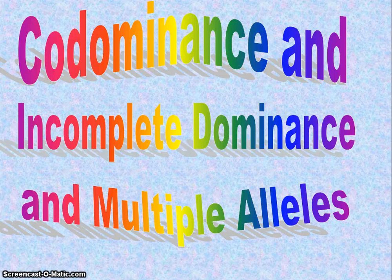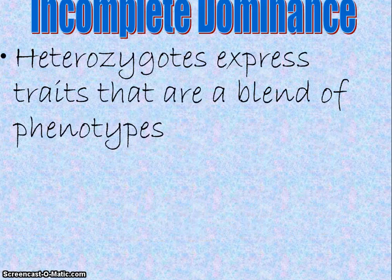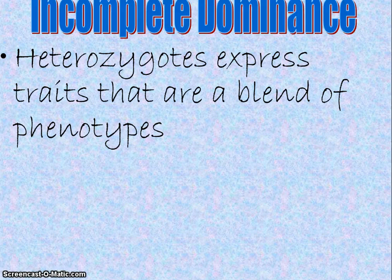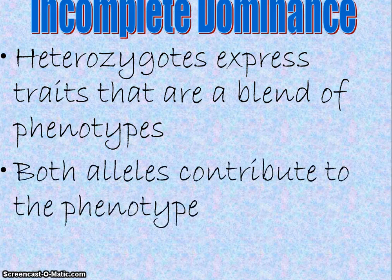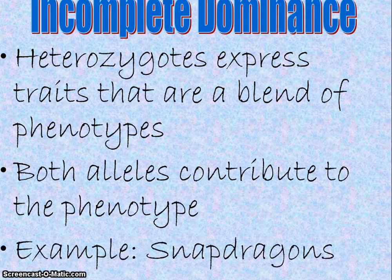Hello. Today we're going to be talking about two different types of problems called codominance and incomplete dominance. Incomplete dominance is when heterozygotes express traits that are a blending of phenotypes. So we have three genotypes coding for three phenotypes, and both alleles contribute to the phenotype — one is not hidden.